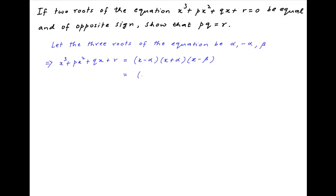Opening up the right hand side, we have x square minus alpha square multiplied by x minus beta, which is equal to x cube minus beta x square minus alpha square x plus alpha square beta.